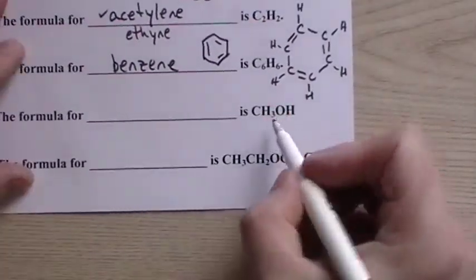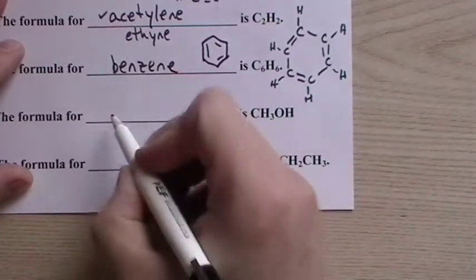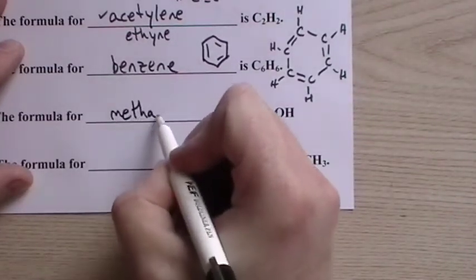And then we have this - we have methane with an OH group on it so it becomes methanol. It's one of the alcohols.